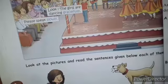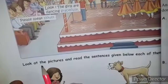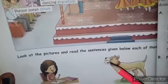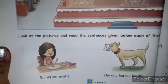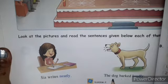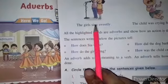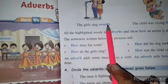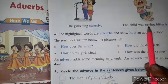Now look at the pictures and read the sentences given below each of them. Pictures ke niche jo sentences write kiye hain unko read karo. Sia writes neatly — Sia safai se likhti hai. The dog barked loudly — kutta jor se bhouka. The girls sing sweetly — ladkiyaan meetha gati hai. The child was crying bitterly — baccha dhukhi ho kar roo raha tha.